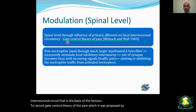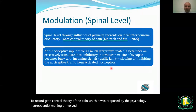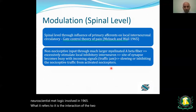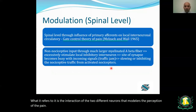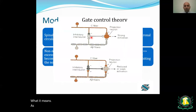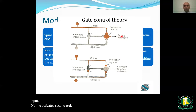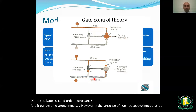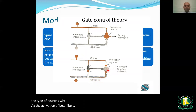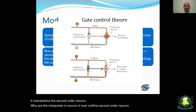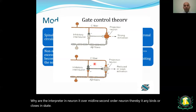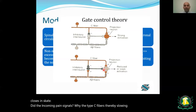Modulation at the spinal level is the basis of the landmark gate control theory of pain, proposed by Melzack and Wall in 1965. It describes the interaction of two different neurons modulating pain perception. Type C fibers activate the second-order neuron, transmitting strong impulses. However, in the presence of non-nociceptive input via type A-beta fiber activation, it overwhelms the second-order neuron through an inhibitory neuron, closing the gate to incoming pain signals from type C fibers — creating a traffic jam.